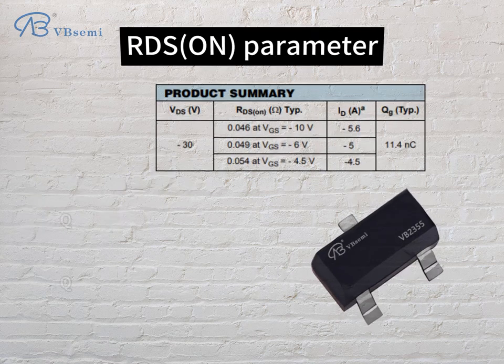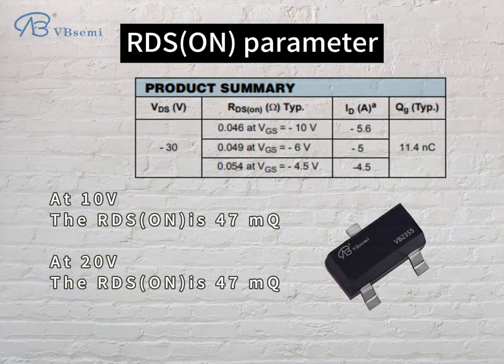RDS(on) parameter: at 10V, RDS(on) is 47mΩ; at 20V, RDS(on) is 47mΩ.